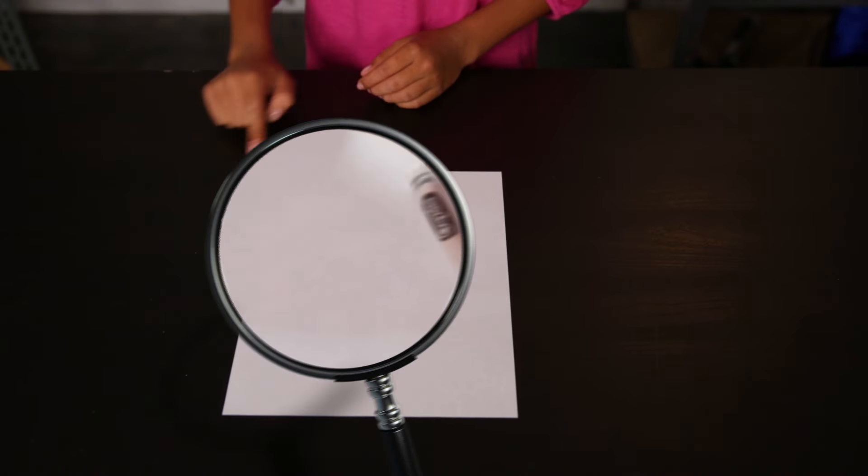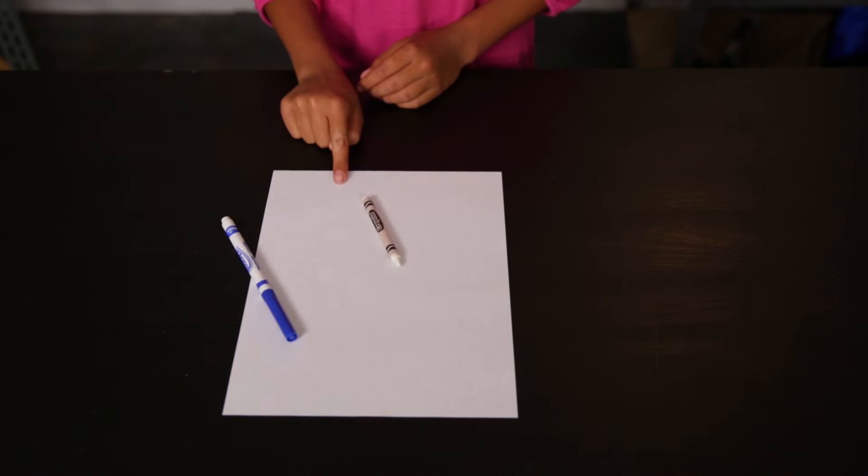First up, we're making invisible ink with ingredients you can find in your desk. You'll need the following items: a white crayon, a colored marker, and a piece of paper.